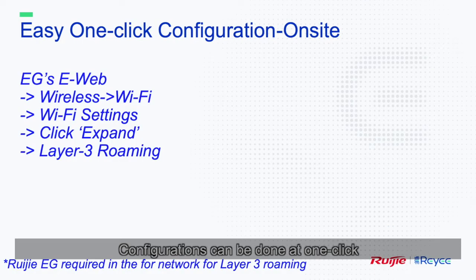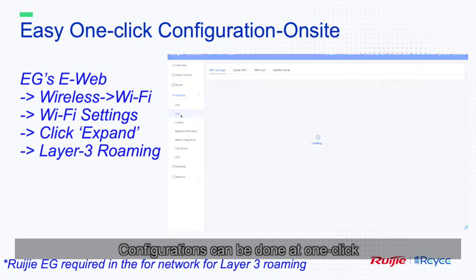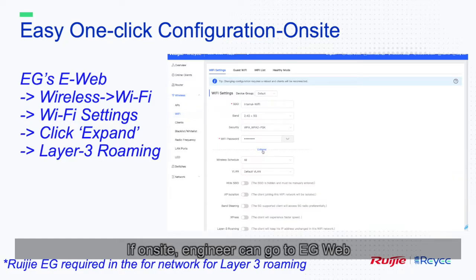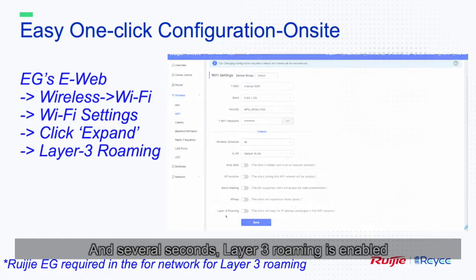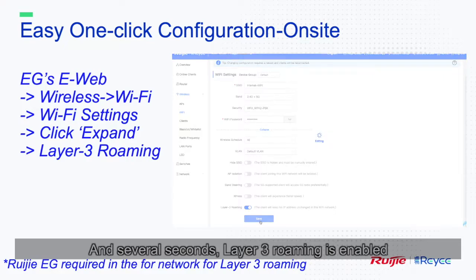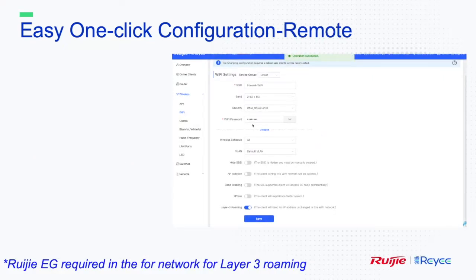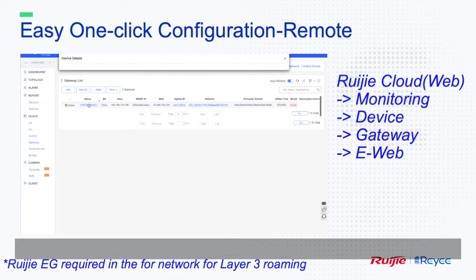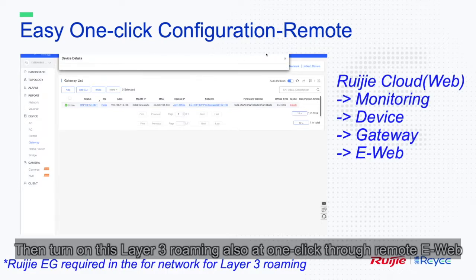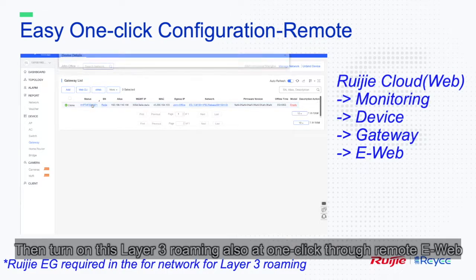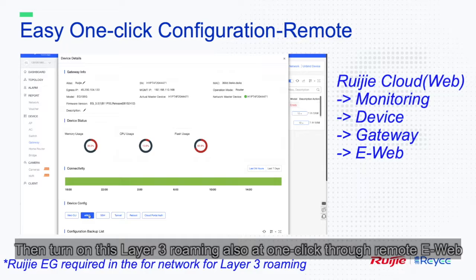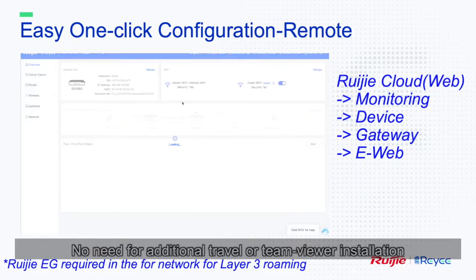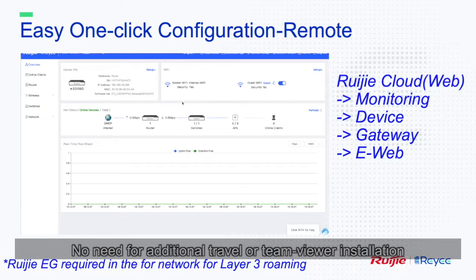Configuration can be done in one click. If on-site, an engineer can go to the eg-web interface and enable Layer 3 roaming in just a few seconds. If working remotely, go to Regie Cloud Web and turn on Layer 3 roaming with one click through remote e-web — no additional travel or TeamViewer installation needed.